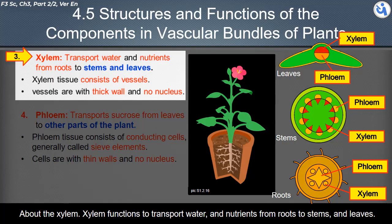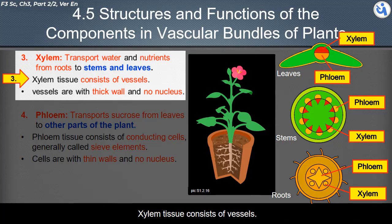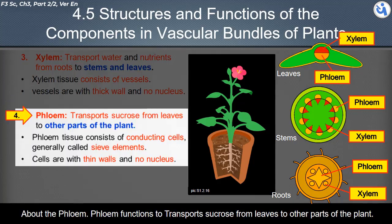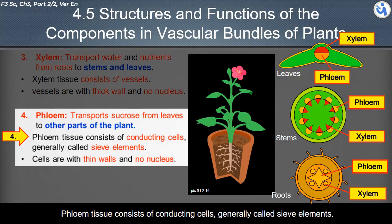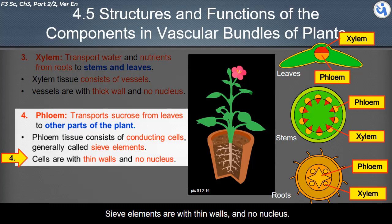Xylem functions to transport water and nutrients from roots to stems and leaves. Xylem tissue consists of vessels with thick walls and no nucleus. Phloem functions to transport sucrose from leaves to other parts of the plant. Phloem tissue consists of conducting cells called sieve elements, which have thin walls and no nucleus.